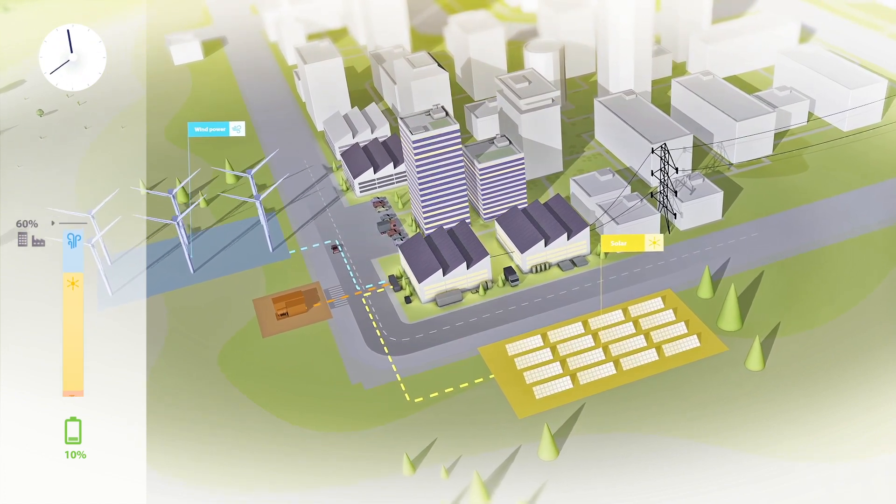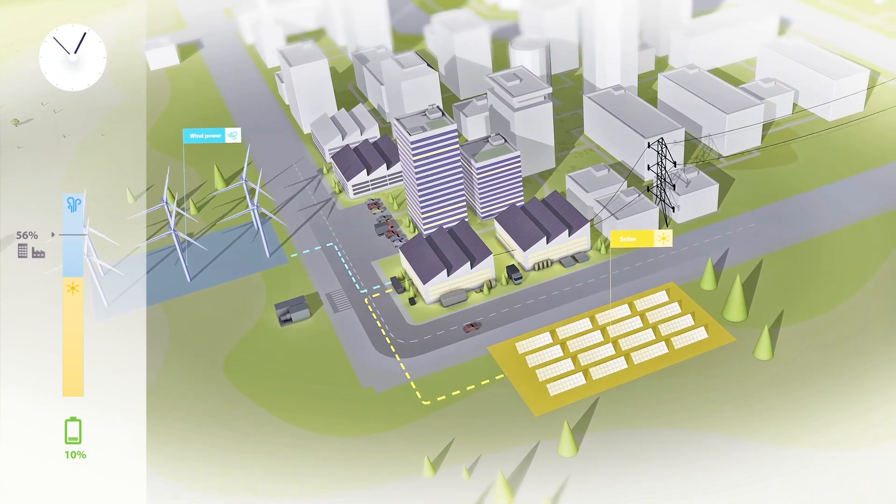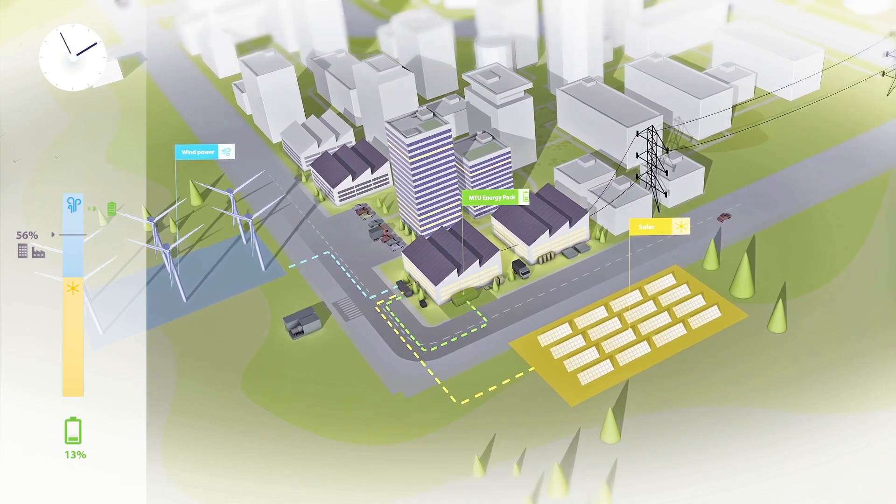During the lunch break, considerably less power is needed while lots of energy is obtained from sun and wind. So the excess wind power can be stored in the battery, which is still discharged.